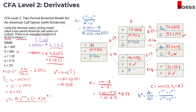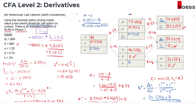Now, coming back to the main question — assuming it's an American call — at period 1, when there is an expected dividend of $2.60, we need to calculate what is the exercise value if we were to exercise the call option in period 1.